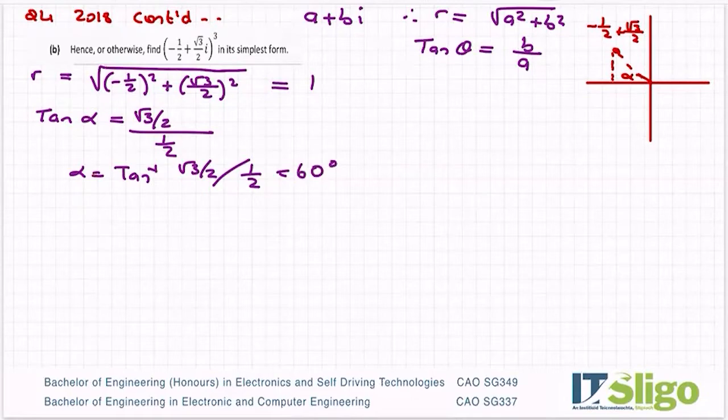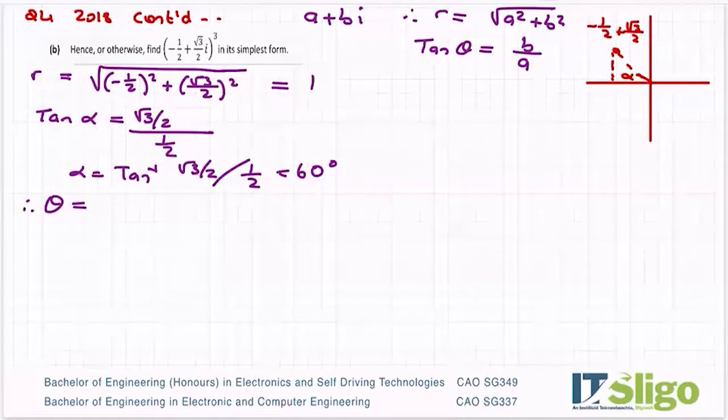And I got 60 degrees for that one. So therefore, my angle of interest, which is this angle here, theta, is equal to 180 degrees minus that 60 degrees. So 120 degrees.